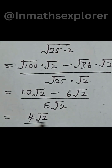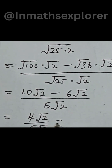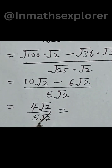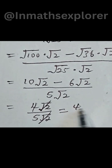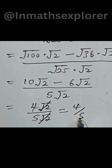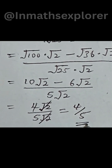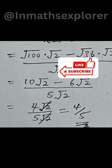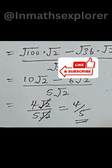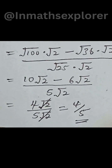That is equal to 4 square root 2 over 5 square root 2. The square root 2 cancels out, and we are left with 4 over 5, and that's the final answer. Like, share, and subscribe to the channel.